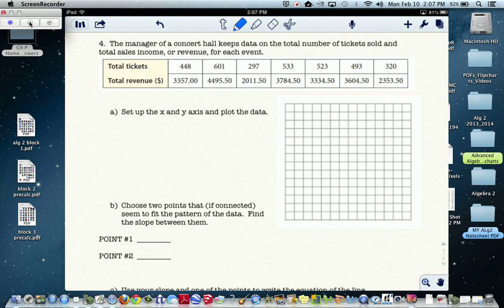The manager of a concert hall keeps data on the total number of tickets sold and total sales income or revenue for each event. We're supposed to set up an x, y axis and plot the data. So at this point, you should pause it and set up the data.